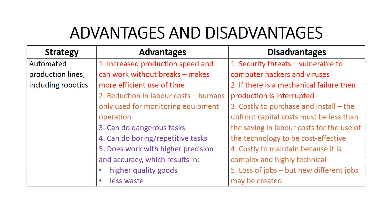We have described automated production lines and robotics as technology strategies that improve efficiency and effectiveness. However, the first learning intention also requires you to evaluate these strategies — to explain and weigh up both advantages and disadvantages. An evaluation is more than a description. You must weigh each advantage against its related disadvantages using words of difference such as 'however,' 'on the other hand,' 'in contrast,' 'whereas,' and 'while.' This requires you to compare apples with apples.